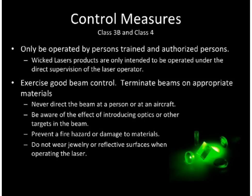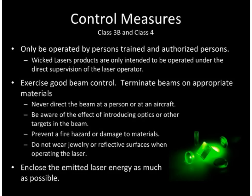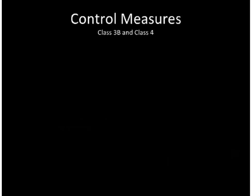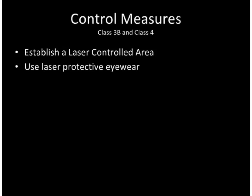Do not wear jewelry or reflective surfaces when operating the laser. Enclose the emitting laser energy as much as possible. Enclosures need to be made of materials that will not transmit levels of laser light above the maximum permissible exposure or be subject to damage from the anticipated laser exposure. Establish a laser control area that should contain the nominal hazard zone. Anyone occupying this area while the laser is operated must be protected from all laser hazards, and all unnecessary personnel should be located outside the controlled area when the laser is operational.